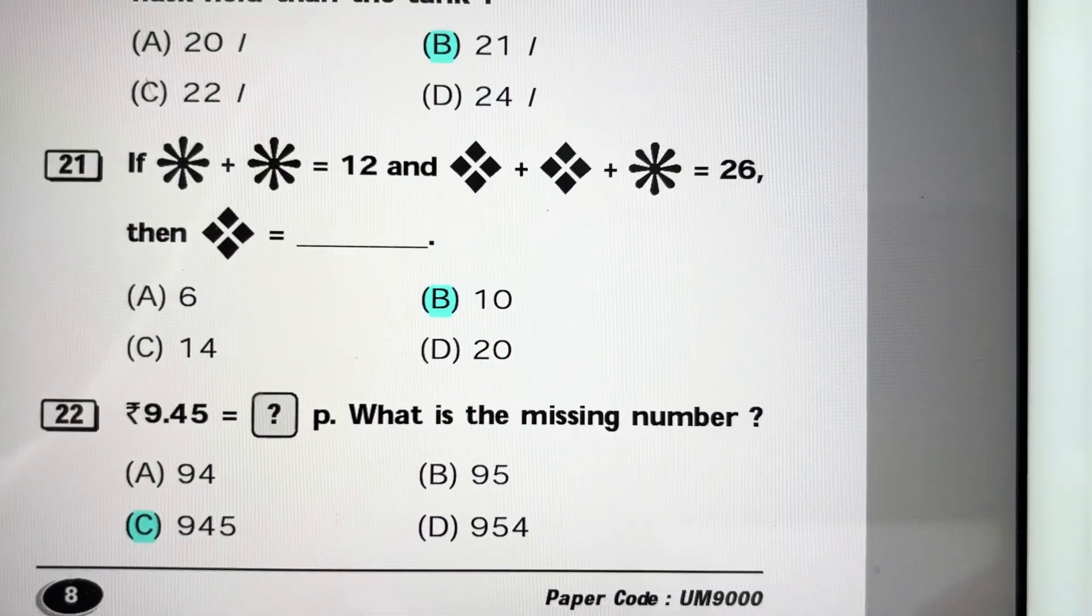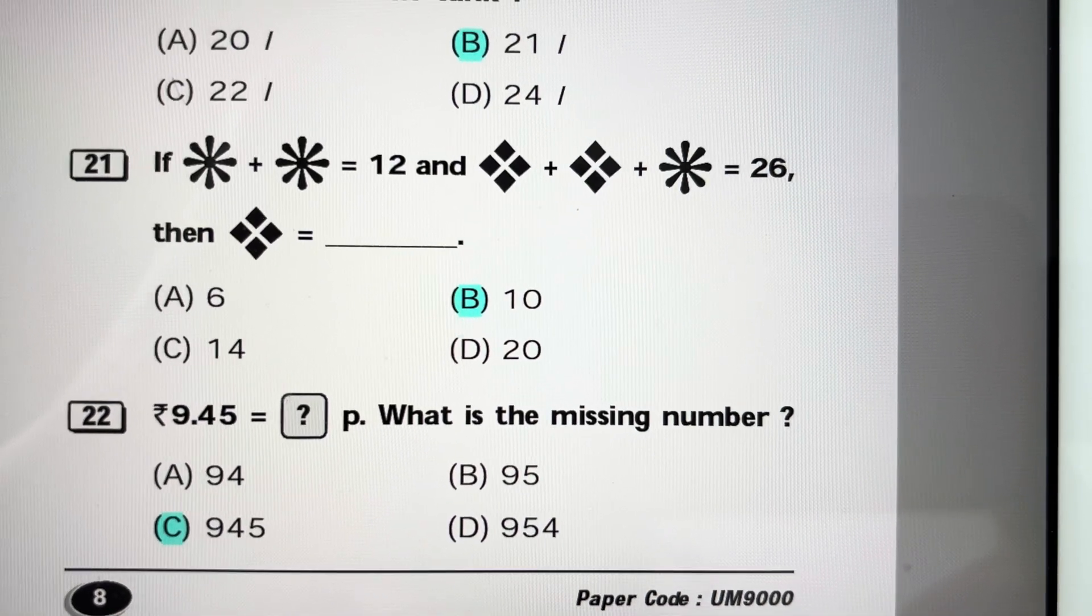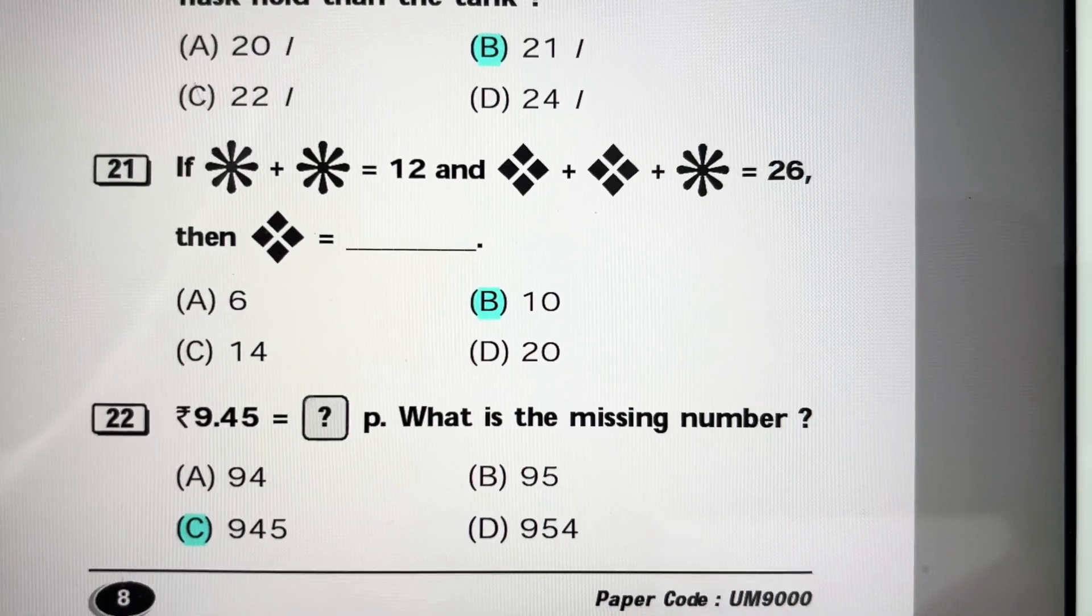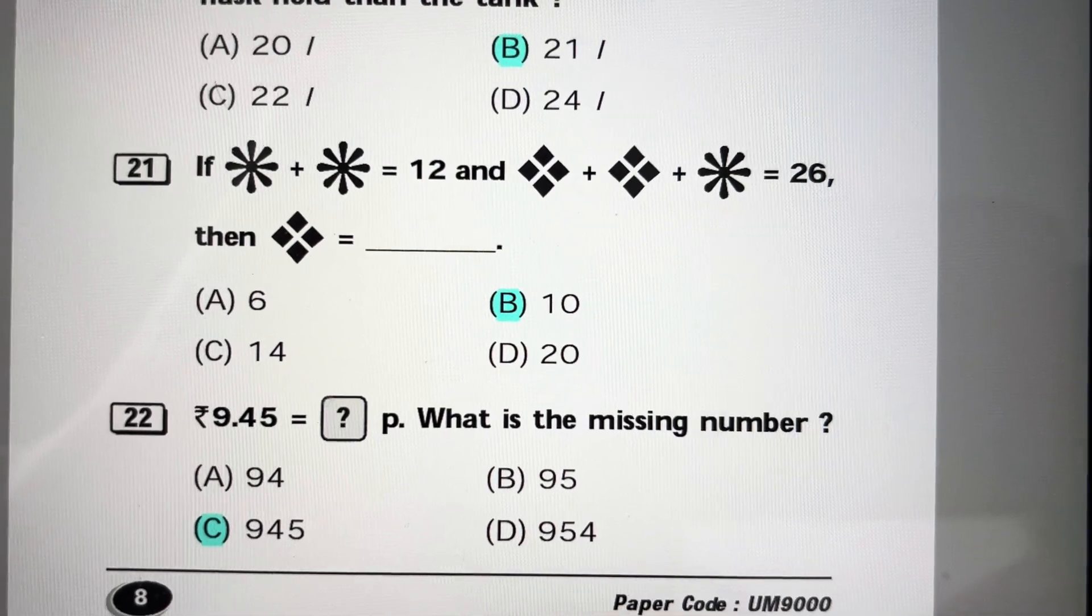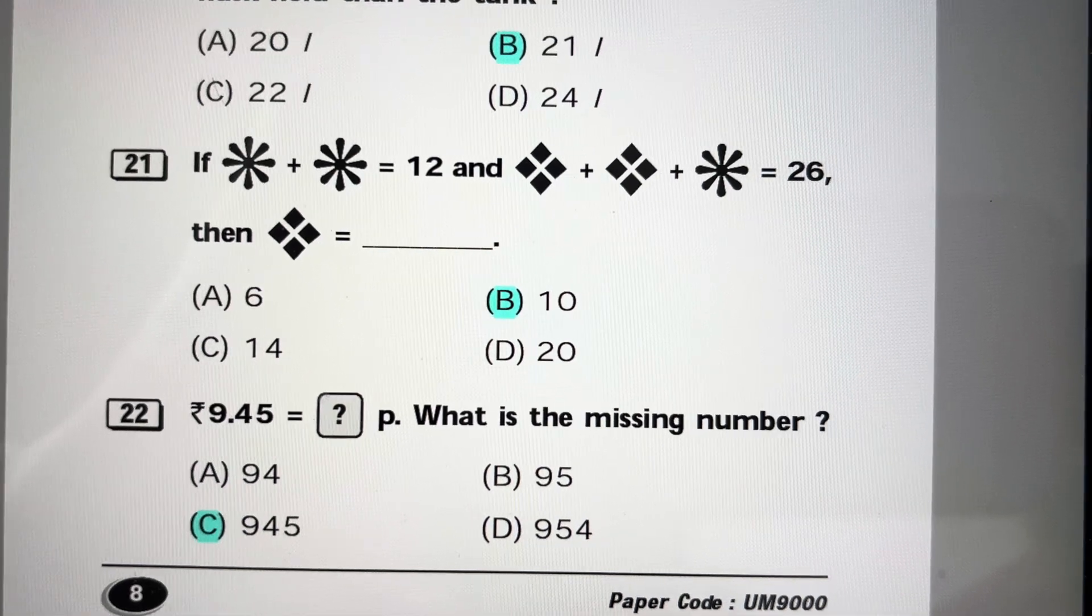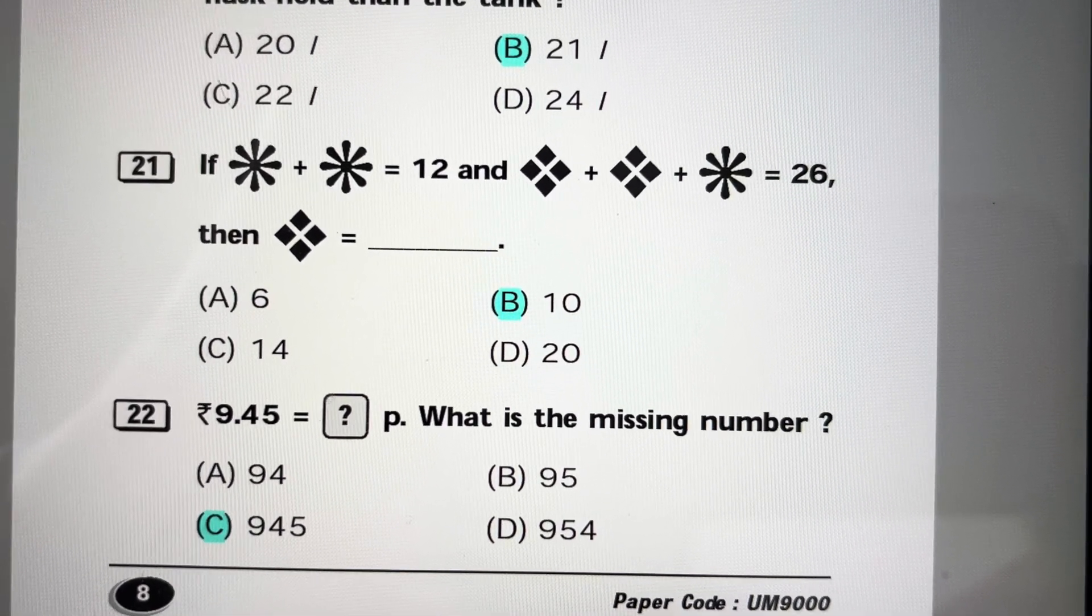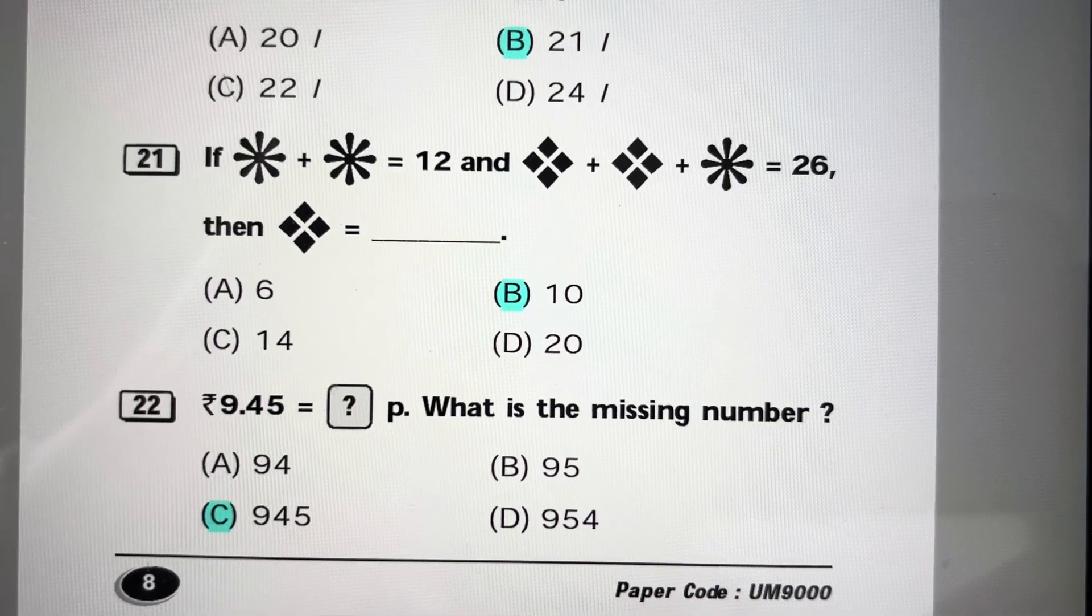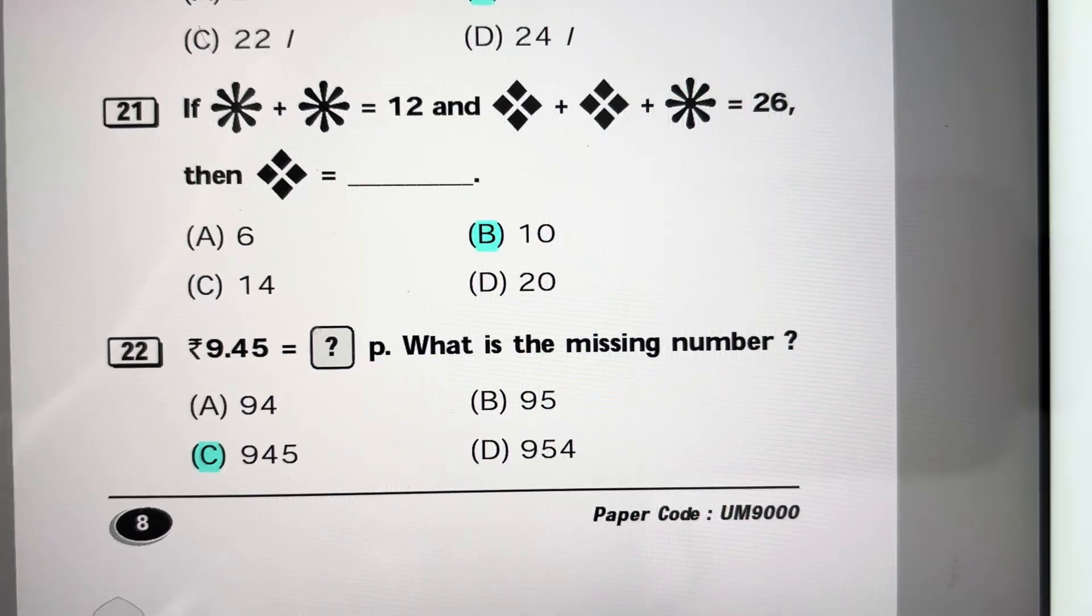If flower plus flower is 12, that means one flower is 6. Then diamond plus diamond plus diamond plus flower is 26, that means diamond plus diamond plus 6 equals 26. So diamond plus diamond equals 26 minus 6, that means 20. Two diamonds equal 20, so one diamond is 10. Answer is 10, B.